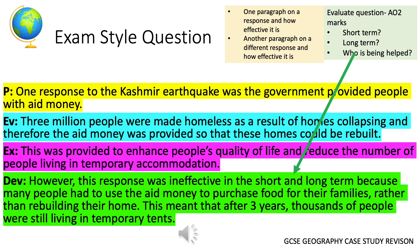On the screen now you can see a model answer. The point is that one response to the Kashmir earthquake was the government providing people with aid money. The evidence includes the fact that three million people were made homeless as a result of buildings collapsing, and therefore this aid money was provided so that homes could be rebuilt. The explanation states that this was done to enhance people's quality of life and try to reduce the number of people living in temporary accommodation following the earthquake.